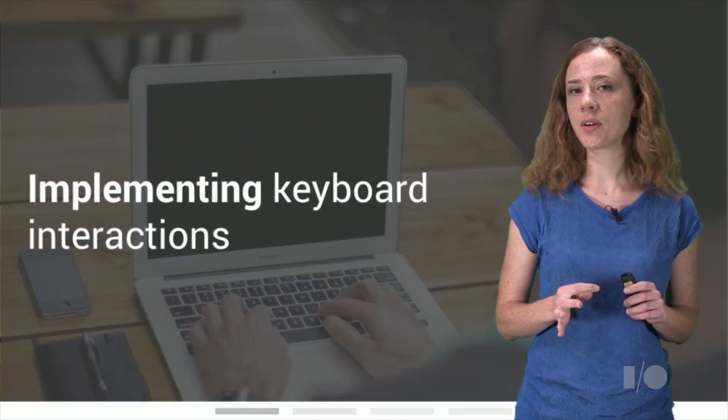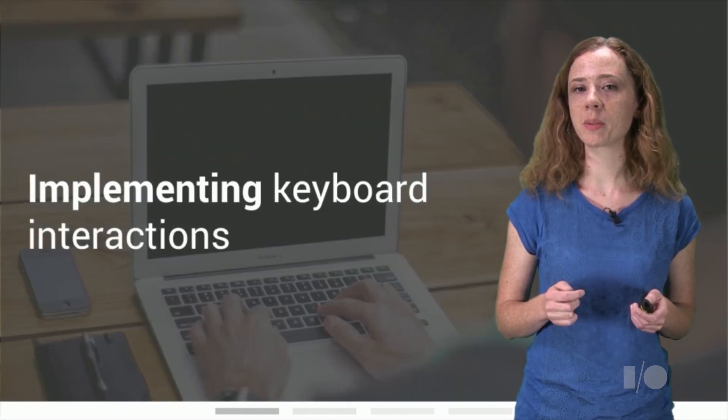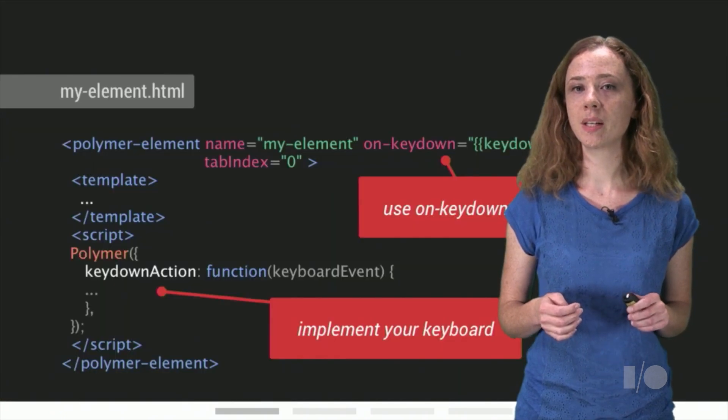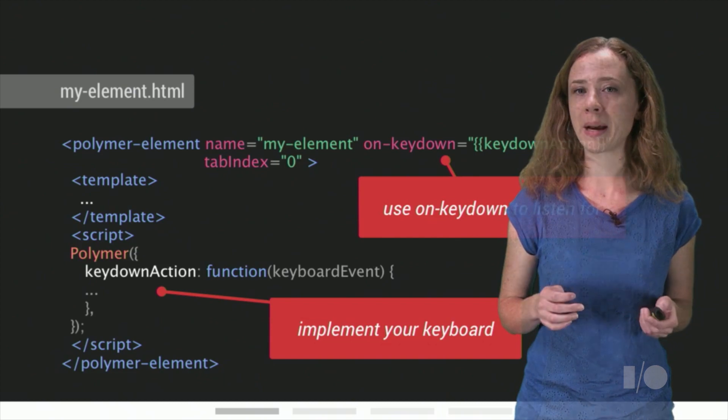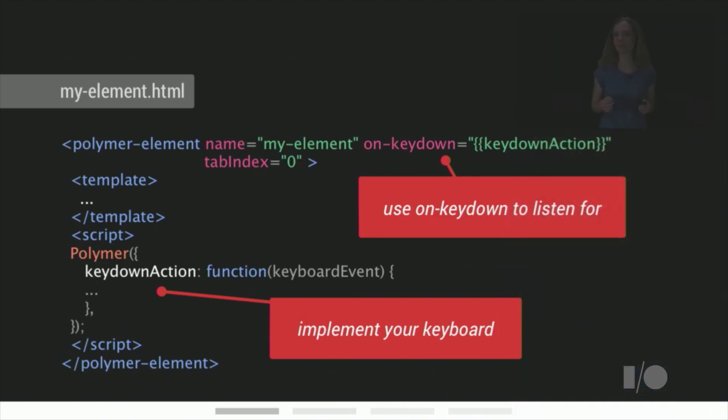So now that you specced out your keyboard interactions and made your element focusable, you need to implement the actual keyboard interactions. Luckily, there's an event handler for that. You can add an onKeyDown attribute to your polymer element and add a method to handle the keyboard event, checking for any keypress events you're interested in. Finally, make sure your keyboard interactions are discoverable, especially if they're not using one of the standard patterns. Tooltips or keyboard help overlays are common patterns for achieving this.